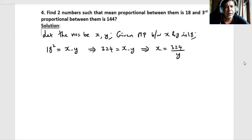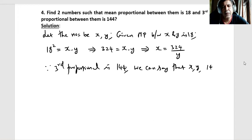Since third proportional is 144, we can say that x, y, 144 are in proportion, which means x is to y is to y is to 144.